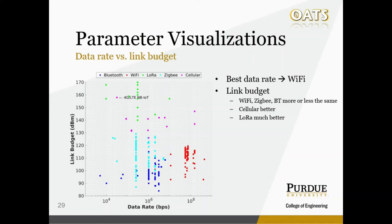In the plot of data rate versus link budget, it's no surprise that LoRa modules have the best link budget because their sensitivity values are so low, which means they are pretty good. For Wi-Fi, ZigBee, and Bluetooth, they are more or less the same, staying between about 90 to 130 dBm. Cellular is a little bit better, and LoRa, as mentioned, is the best in terms of link budget.